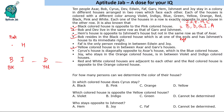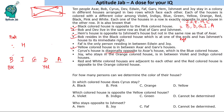Cyrus's house is diagonally opposite to Akser's house, which is the blue coloured house. Diagonally opposite means end-to-end. Akser cannot be at one end position, so Akser has to be at the other end. This makes Gaurav on the other side, and it is given that Cyrus is diagonal to Akser. So Akser's house is the blue coloured house.